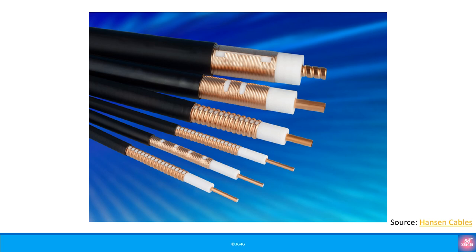Coming back to the leaky feeders, there are different types for different scenarios, with different losses at different frequencies. Generally, for mobile signals underground you would have long and thick cables where the impedance is low, meaning RF losses can be kept manageable. There is also a challenge around how long the cable should be and how much space you have in the tunnels. The London Tube network tunnels are quite narrow with very small space, so you don't have the flexibility of putting whatever you want.